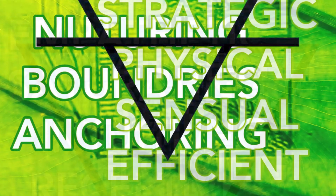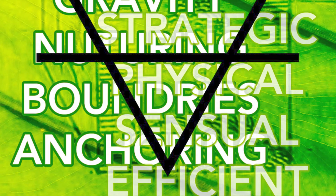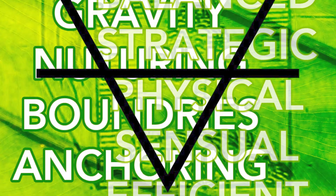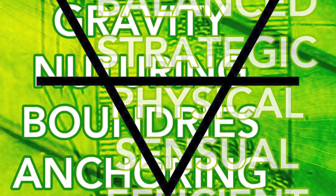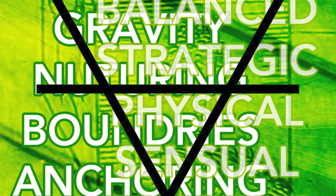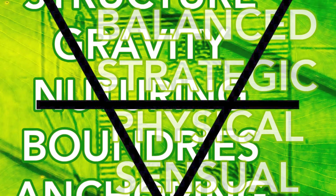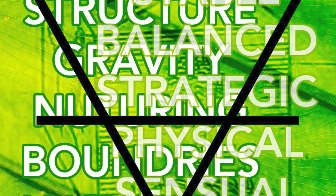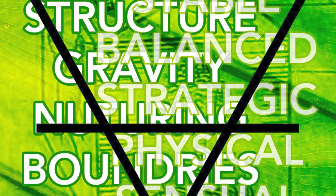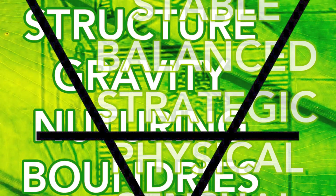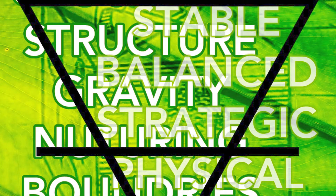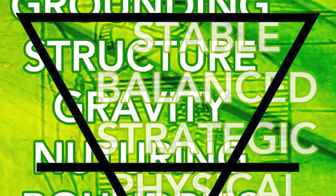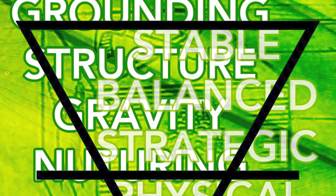Earth is connected to structure, grounding, practicality, sensuality, stability, and order. The cube has six sides of squares relating to the root chakra, base survival needs, and the elimination process, as well as the direction of north.